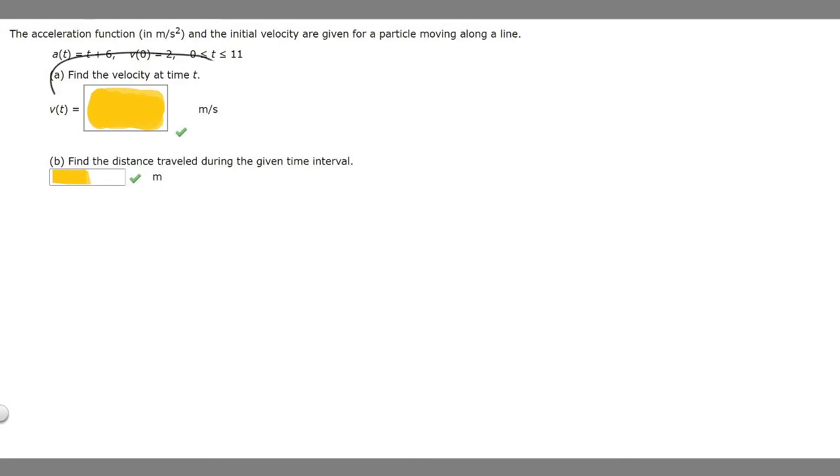Let's start with part a: find the velocity at time t. So basically we need to find the velocity function. We know what acceleration is, a(t) is equal to t plus 6. We've got to find the antiderivative of this.